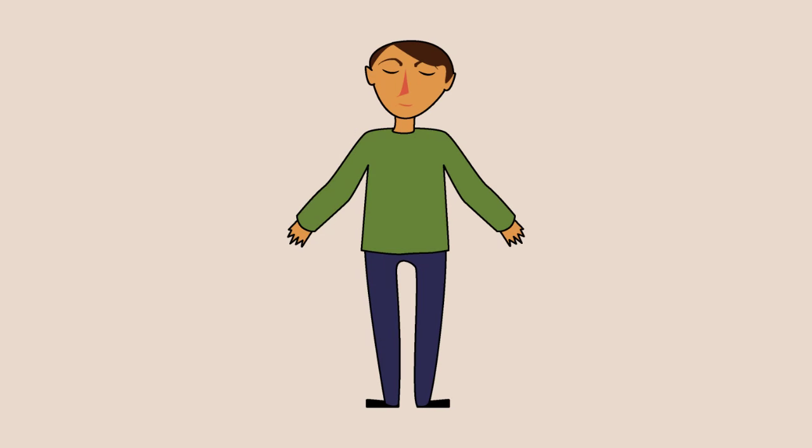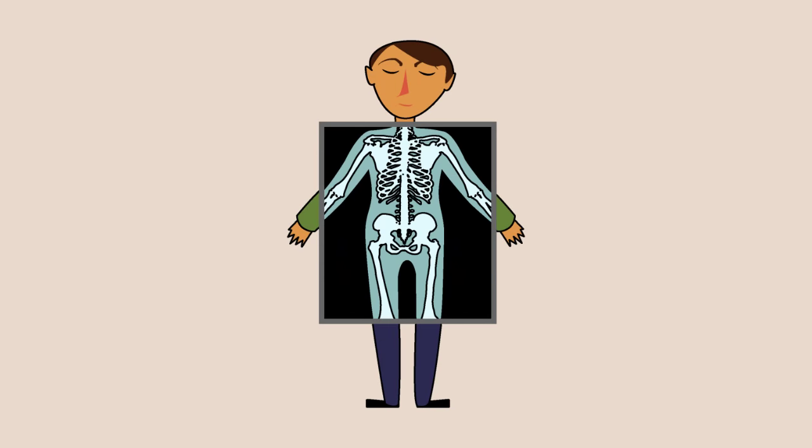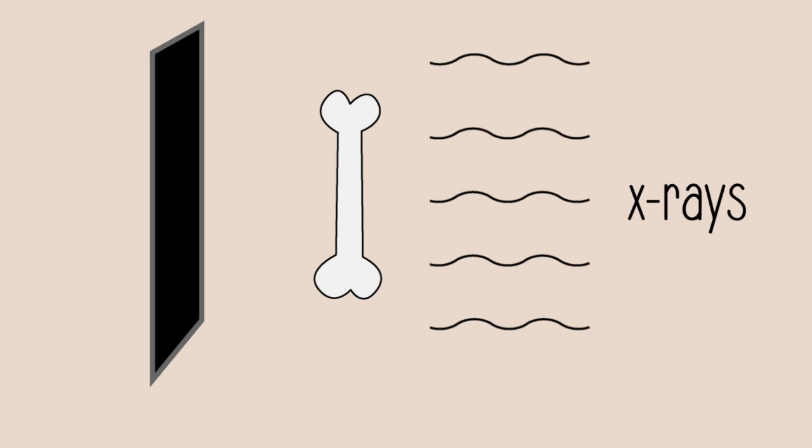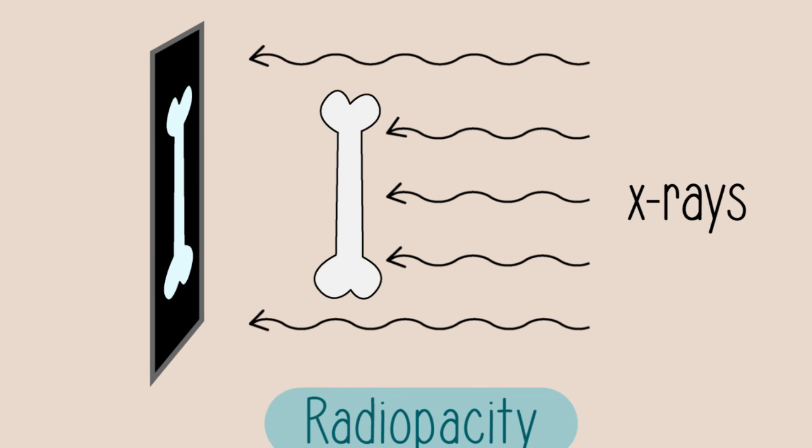Let's close your eyes and picture an x-ray image. You have likely pictured something like this. Whichever part of the body you've pictured, it was an image with your bones. This is possible because x-rays cannot pass through your bones. This property is known as radio opacity.